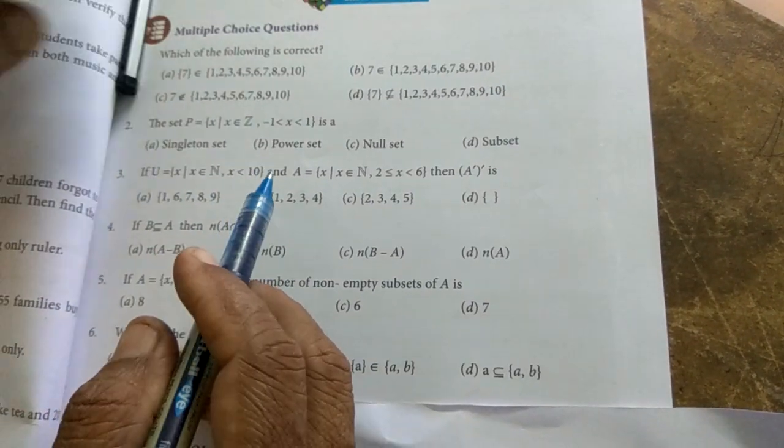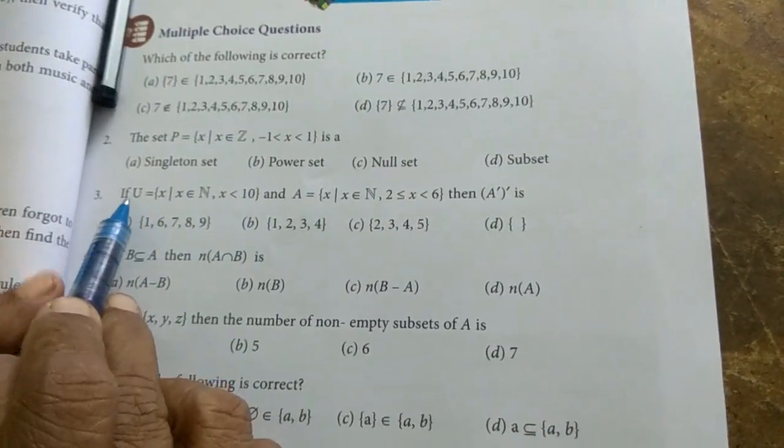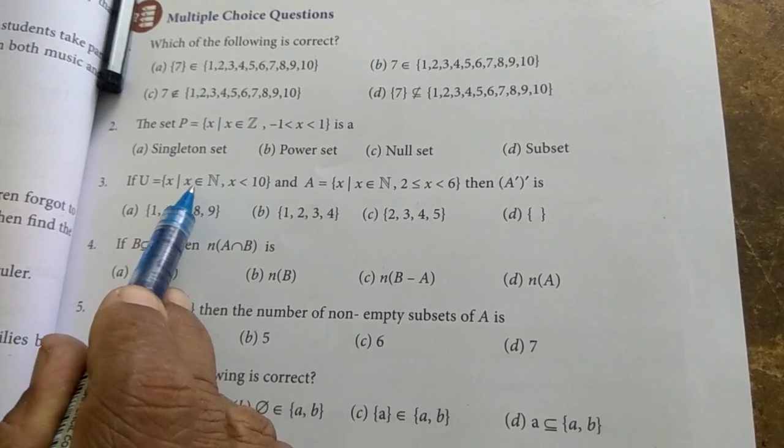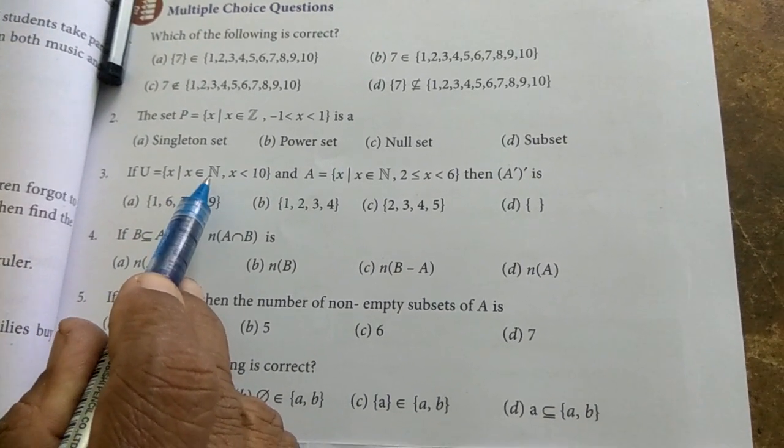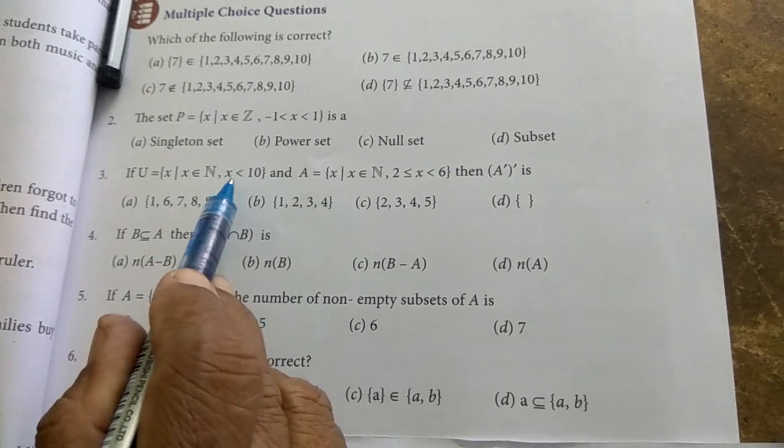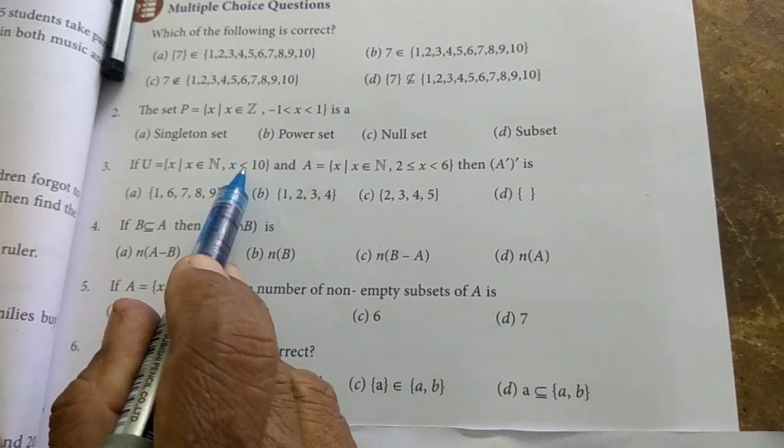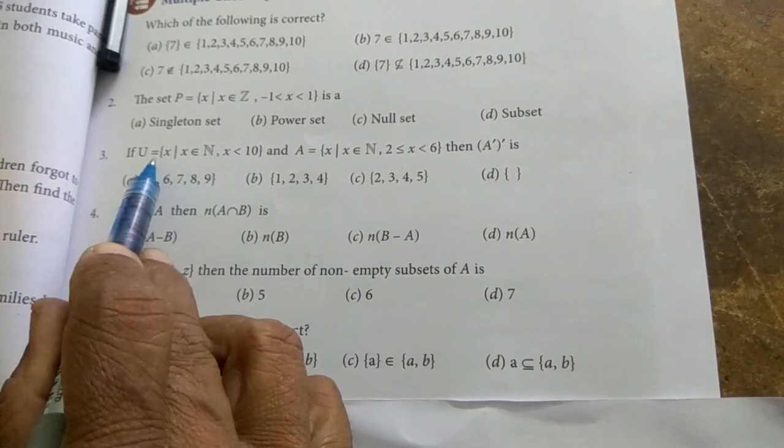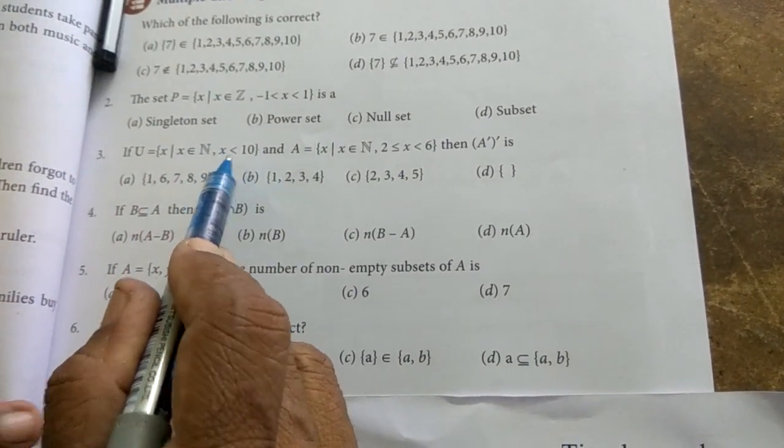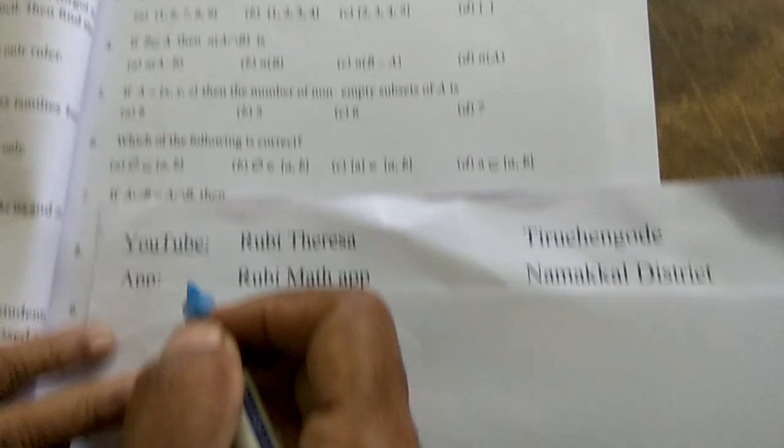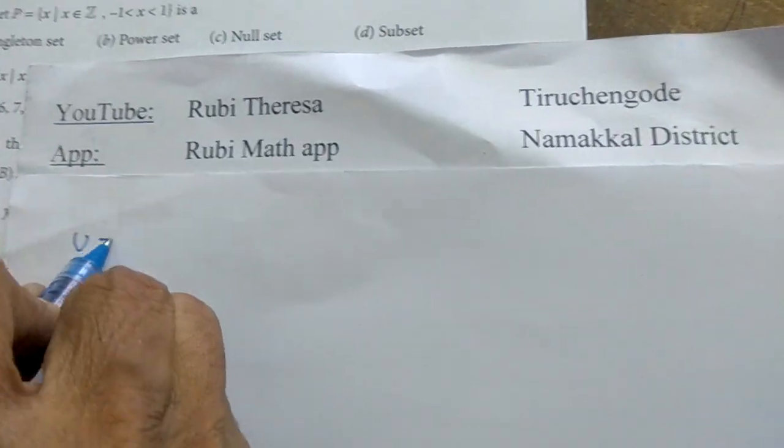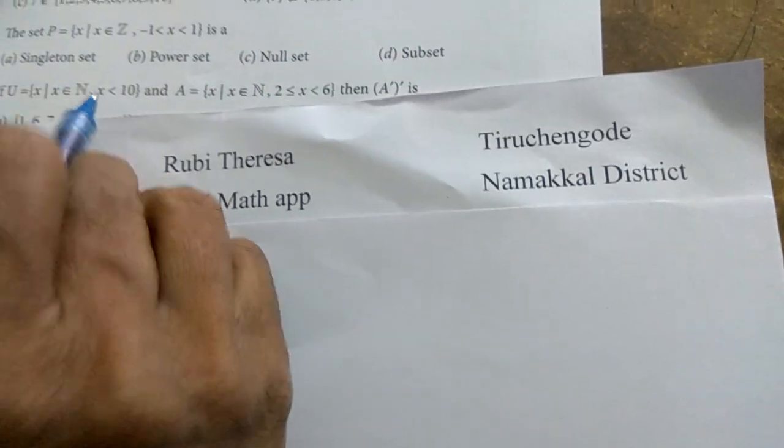Listen here, this is the first sum. If U equals x such that x is an element of N, N is natural numbers, x is less than 10. Actually this form is called set builder form. So to do the sum, better you can convert this into roster form. So U equal to, what is it.